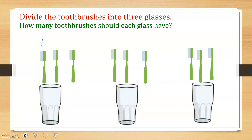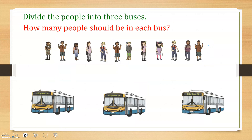One, two, three — one, two, three — one, two, three. Each glass has three toothbrushes. Divide the people into three buses. How many people should be in each bus? Let's count how many people there are.